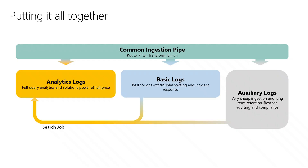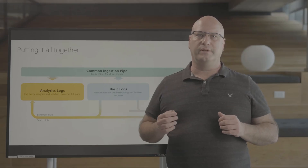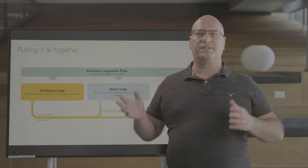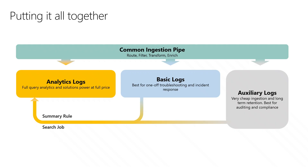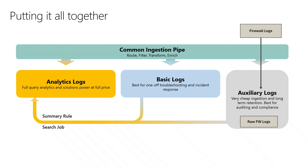The last tool is summary rules. These rules allow you to generate daily or hourly aggregations on your data. This enables you to ingest large volumes of data into basic or auxiliary logs, and bring to analytics only the most important things. For example, you can ingest all of your firewall logs as auxiliary logs, and create a summary that shows you the hourly addresses that interact with each other.